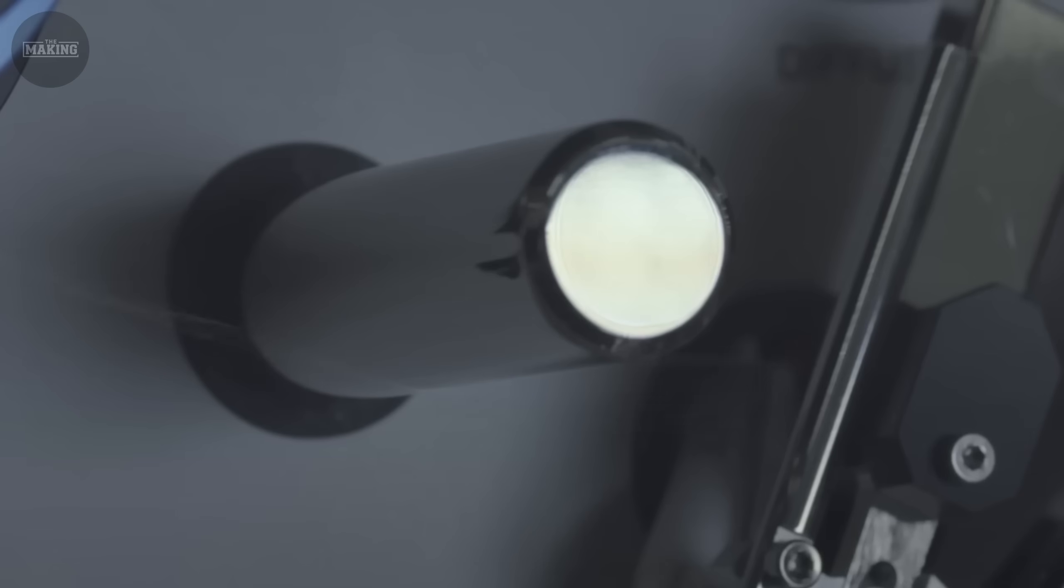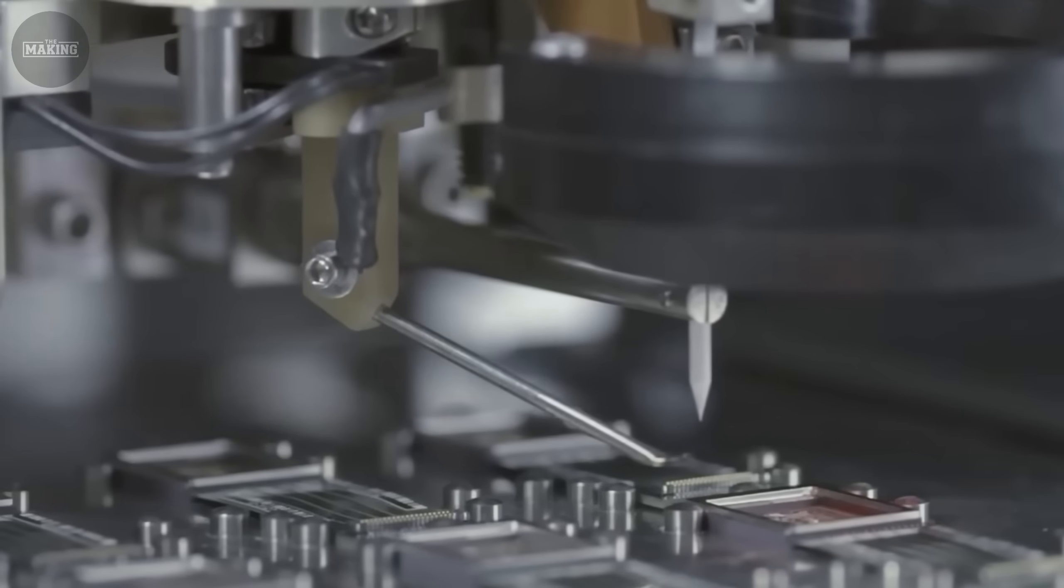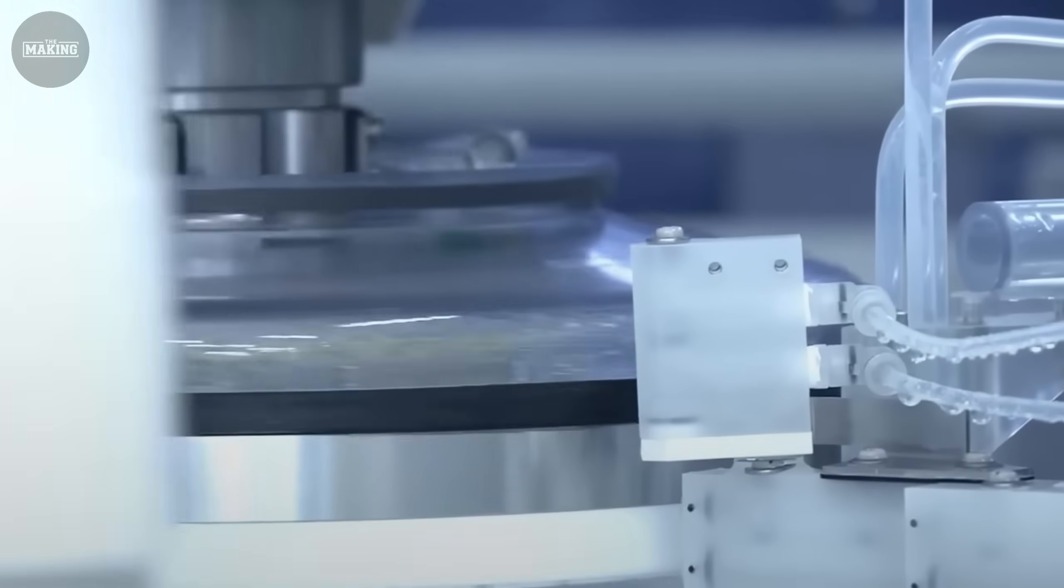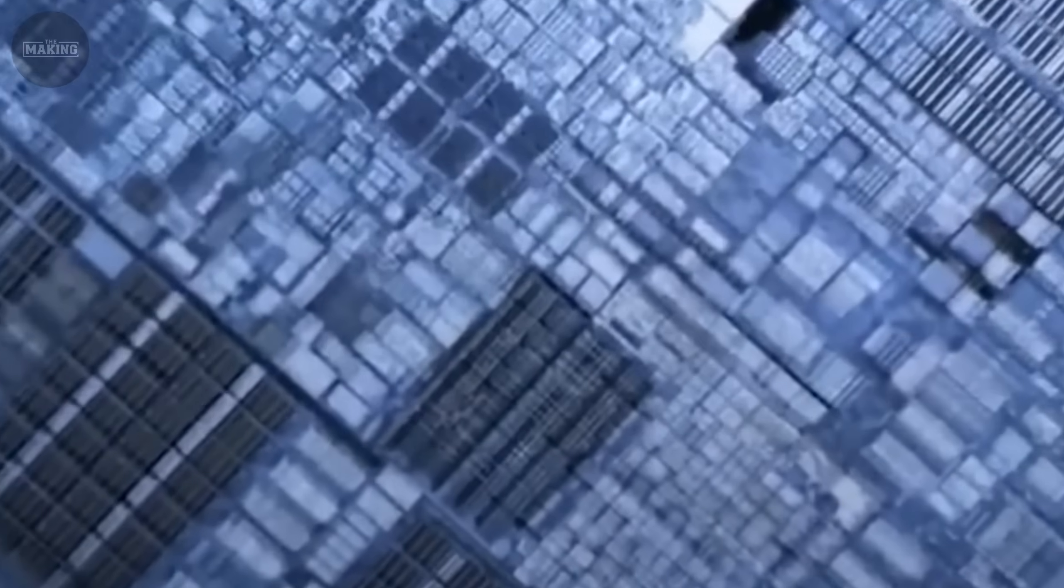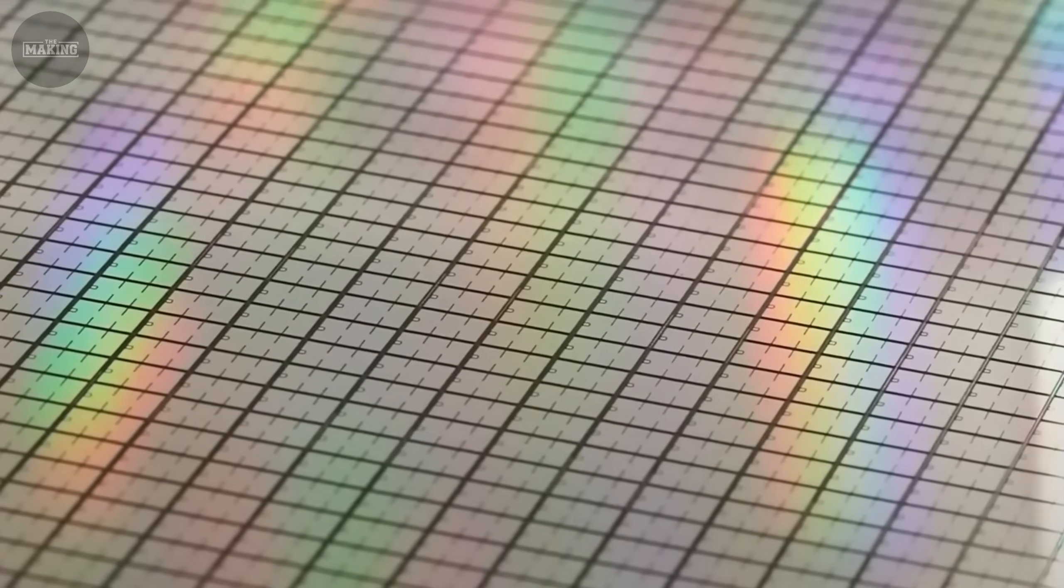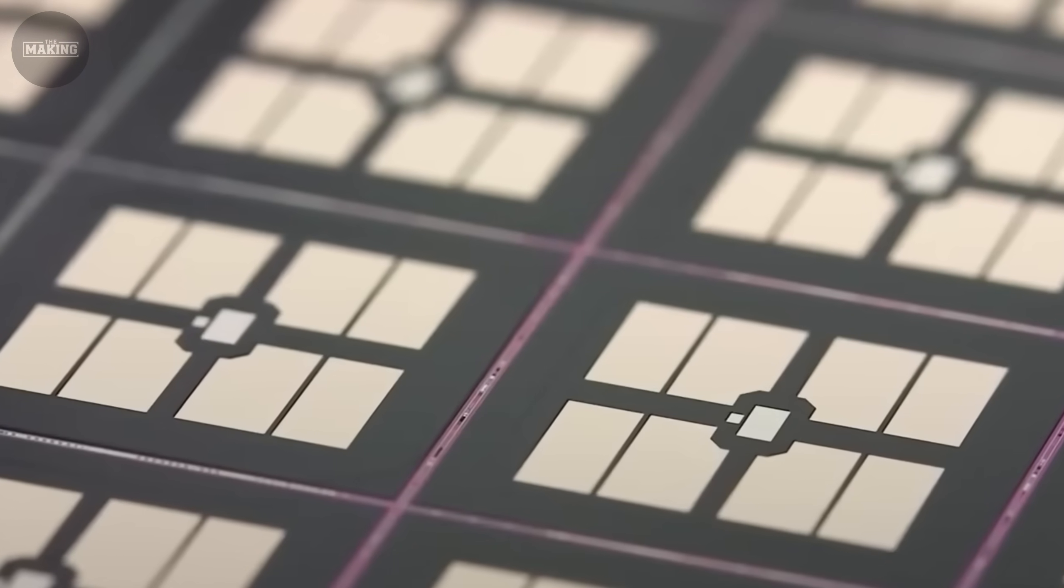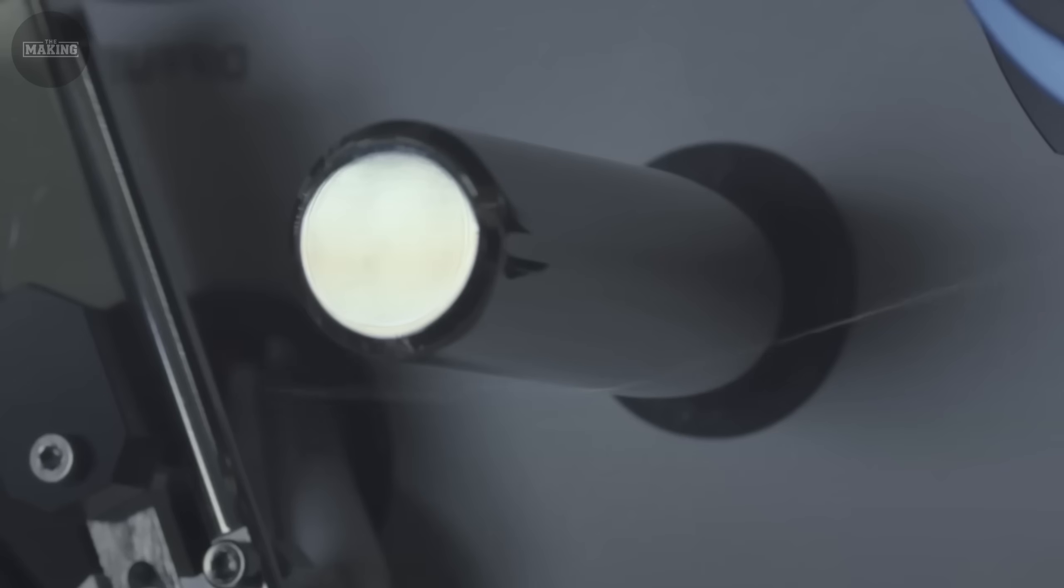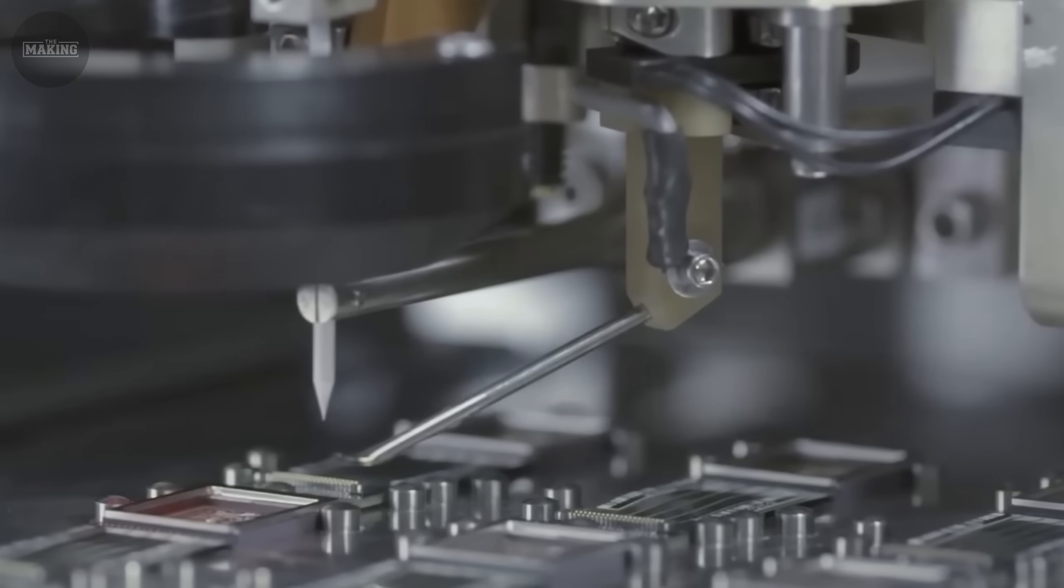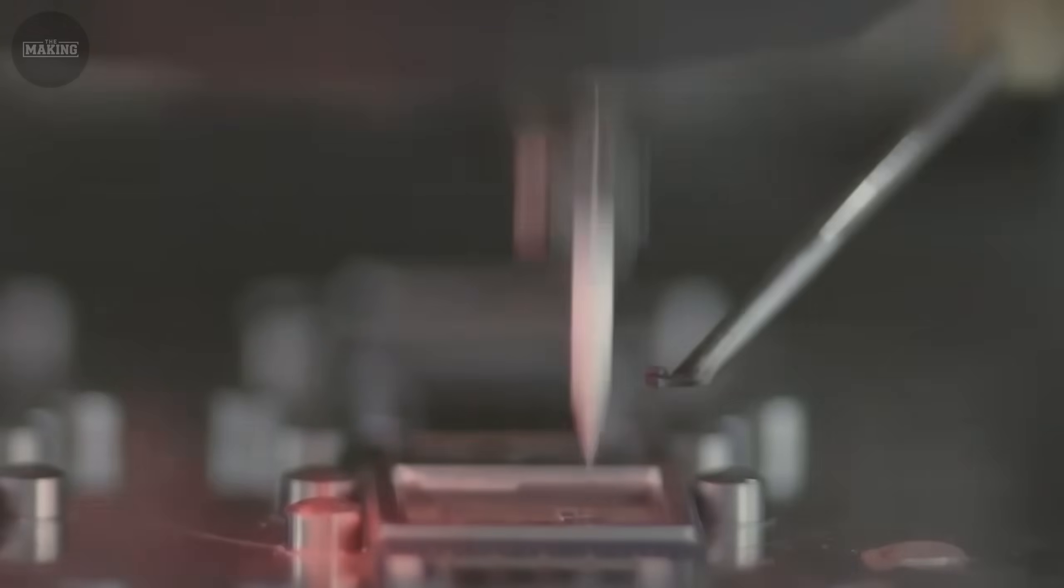After each exposure, the real magic happens through etching and deposition. Plasma chambers heat gases to 15,000 degrees Celsius, twice as hot as lightning, to carve away unwanted silicon with atomic precision. The etching must stop at exactly the right depth, measured in individual atomic layers. Too shallow and circuits don't connect. Too deep and they short out.